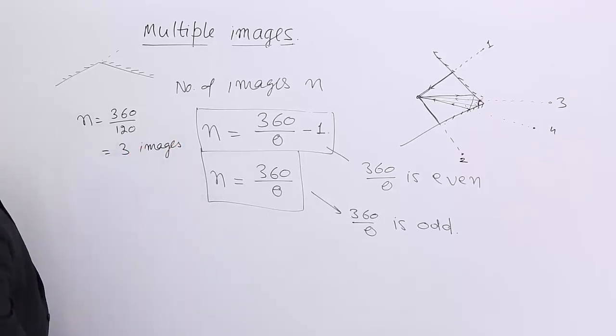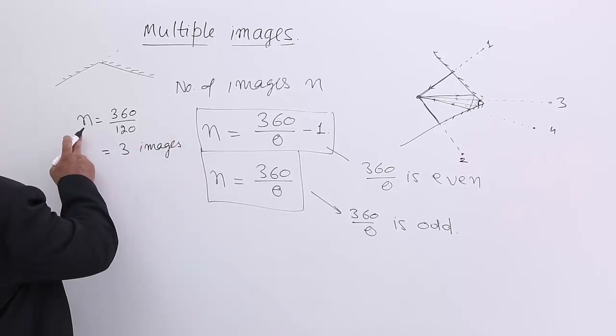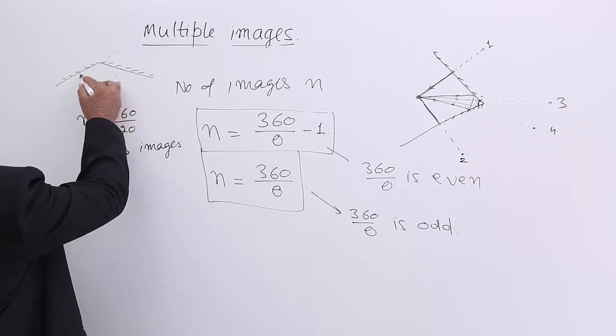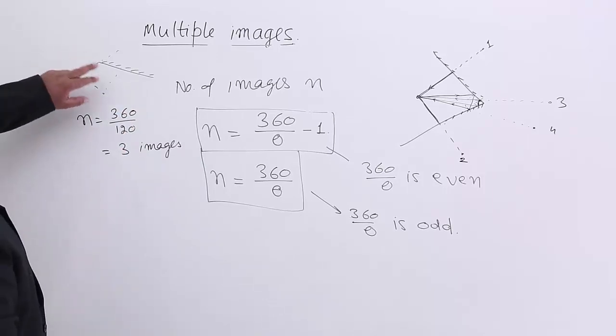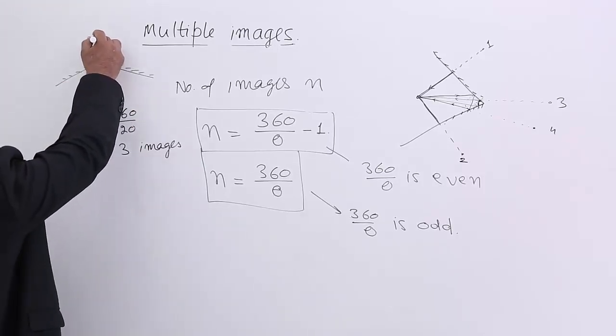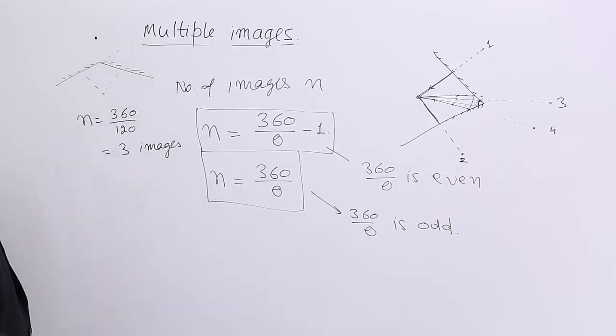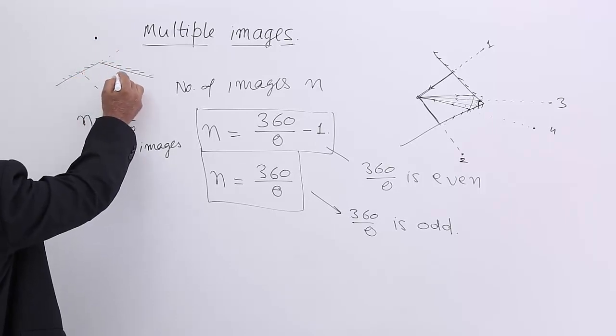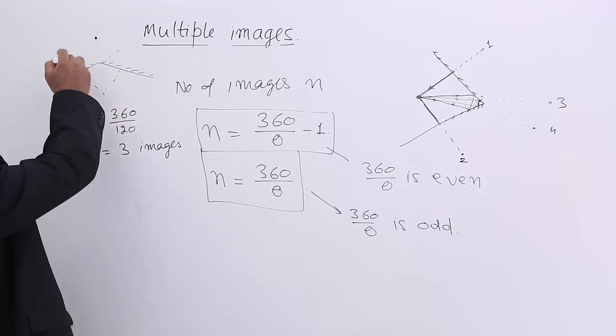So we will be able to see three images here. One image will be from here, one image from here, and one by the multiple reflections. The ultimate image will be only one because two images will overlap. So there will be total three images this way.